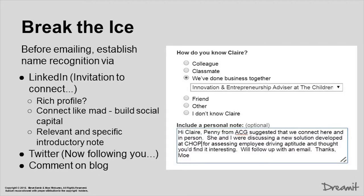When breaking through on email, the first thing you need to do is break the ice. Before you even send an email, we want you to establish some name recognition with the recipient. The first thing that we think is really important to do is send a LinkedIn invitation to connect. So you're going to link in with them on LinkedIn, then send your email. If you're going to be using LinkedIn — and I'm sure you're going to be using it — a couple of important things.